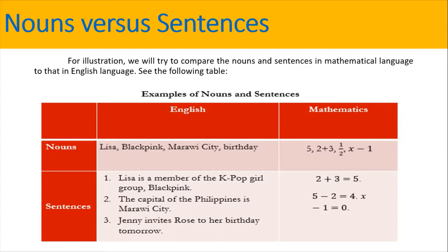Now, with the mathematics, we have 2 plus 3 equals 5, and we have 5 minus 2 equals 4 times x, and then we have x minus 1 is equal to 0.